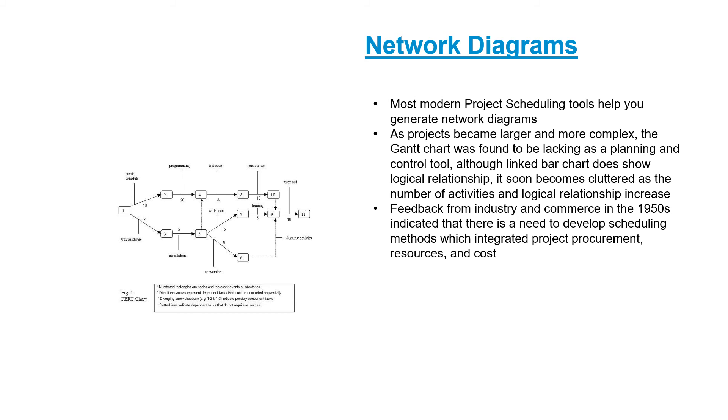Now as projects became larger and more complex the Gantt chart was found to be lacking as a planning and control tool. Although Gantt chart does show logical relationship it soon became cluttered as the number of activities and logical relationships increased. So a typical project could have up to 500-600 activities. So using a bar chart to indicate the relationship it becomes very difficult to read and comprehend. So usually what we do is at a higher level we prefer having a network diagram to have a bird's eye view of the project and its key work packages. And for detailed micro level planning we would prefer to use a tool such as the bar chart.